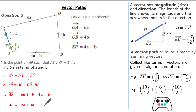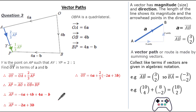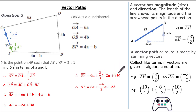Knowing vector AP, I can put it back into my vector path to find OY. This gives me OA is 6a, and 2 thirds of vector AP, which is minus 2a plus 3b. Expanding this out gives me 6a, and 2 thirds multiplied by minus 2a is minus 4 thirds a, and 2 thirds multiplied by 3b is simply 2b. Collecting like terms gives the final vector OY to be 14 thirds a plus 2b.